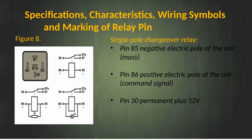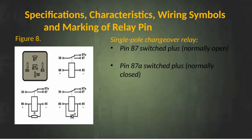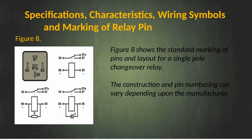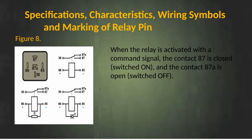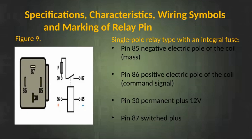Single pole changeover relay. Pin 85 — negative electric pole of the coil; Pin 86 — positive electric pole of the coil; Pin 30 — permanent plus 12 volts; Pin 87 — switched plus; Pin 87A — switched plus (alternate). Figure 8 shows the standard marking of pins and layout for a single pole changeover relay. The construction and pin numbering can vary depending upon the manufacturer. At normal position when coil has no command signal, pin contact 87 is normally open and contact 87A is normally closed. When the relay is activated with a command signal, contact 87 is closed and contact 87A is open.